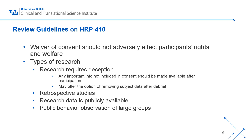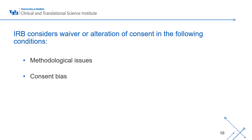For waivers of consent, the most common approved cases are retrospective studies for previously collected data, studies where research data is publicly available, or public behavior observation of large groups of people. Other conditions the IRB may consider include potential methodological issues, such as an epidemiology study where a full sample is needed to establish the prevalence of certain conditions, or potential consent bias — for example, where those with more socially accepted views on a subject may be more likely to participate than those whose views are less popular.